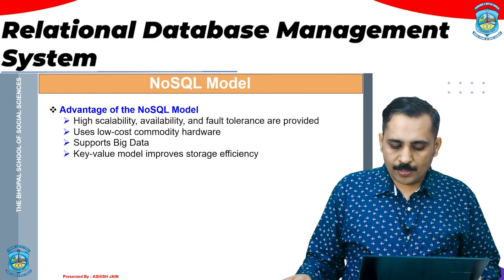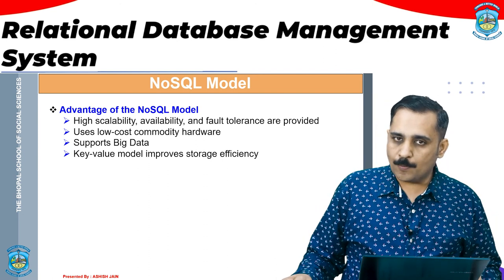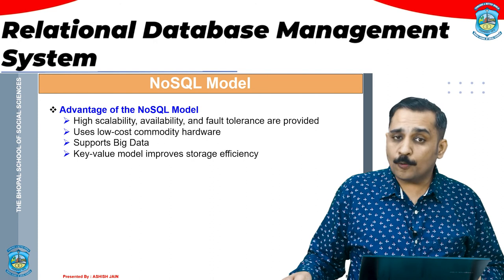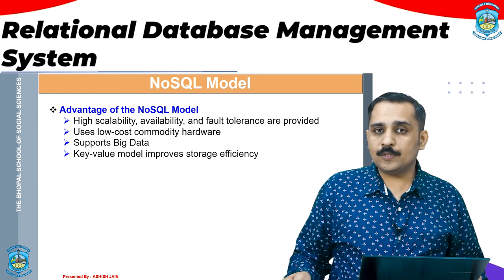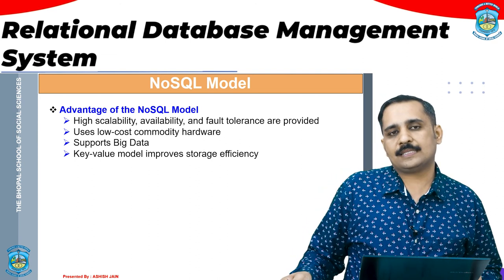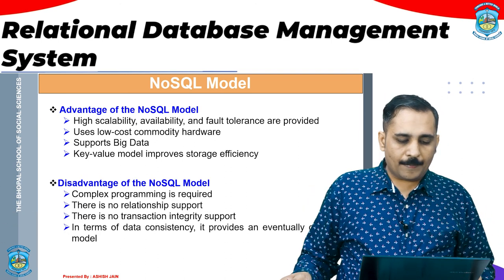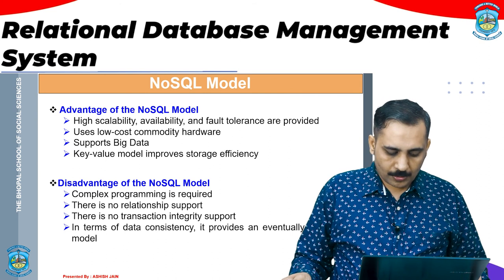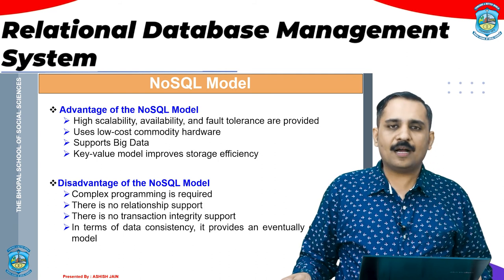These are some advantages of the NoSQL model: high scalability, availability, and fault tolerance. It uses low-cost commodity hardware — no specialized hardware is required, a normal system can be used. It supports big data, which is the major advantage — that is why it is frequently used for maintaining big data. The key-value model improves storage efficiency, just like indexing using an index value so you can easily search and find things. But it has some limitations: it requires complex programming, there is no relationship support, there is no transaction integrity, and in terms of data consistency it provides only an eventual consistency model.